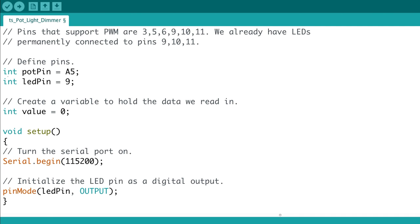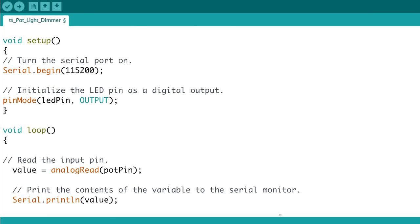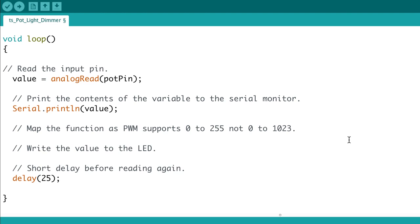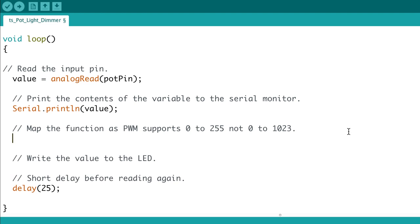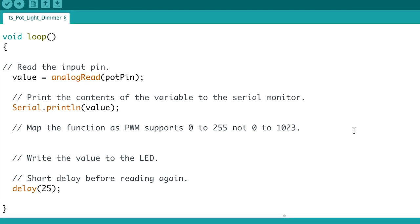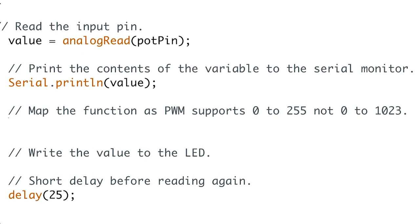Then we'll go down to the comment 'map the function as PWM support 0 to 255 not 0 to 1023'. To get around this problem we need to scale the number. While you could just divide by 4, in this case we're going to use the map function because it's such a useful tool to have in your toolkit when things don't work out as nicely.